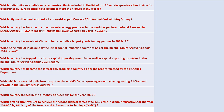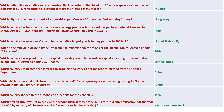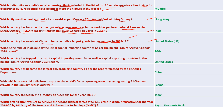Mumbai was the most expensive Indian city on the list of the 20 most expensive cities for expatriates, with the world's highest residential housing prices. Hong Kong was the most expensive city in the world as per Mercer's 25th Annual Cost of Living Index. India became the lowest-cost solar energy producer in the world as per International Renewable Energy Agency (IRENA). The United States overtook China to become India's largest goods trading partner in 2018-19. India's rank is 20th among capital-importing countries as per the Knight Frank Active Capital report.